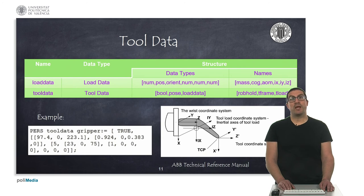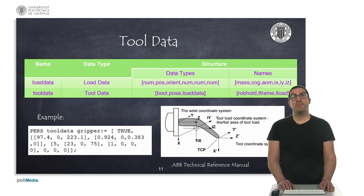Actually, the tool is defined with the data type tooldata that has a variable to indicate whether the tool is being used or not, a position to indicate a reference frame of the tool tip or TCP, and also the load data of the tool, which is of type data load data, which includes parameters such as mass, position and orientation of the center mass, and the inertia. In the figure, I show the coordinate frame of the tool as well as the center of gravity and the axis of the inertia.